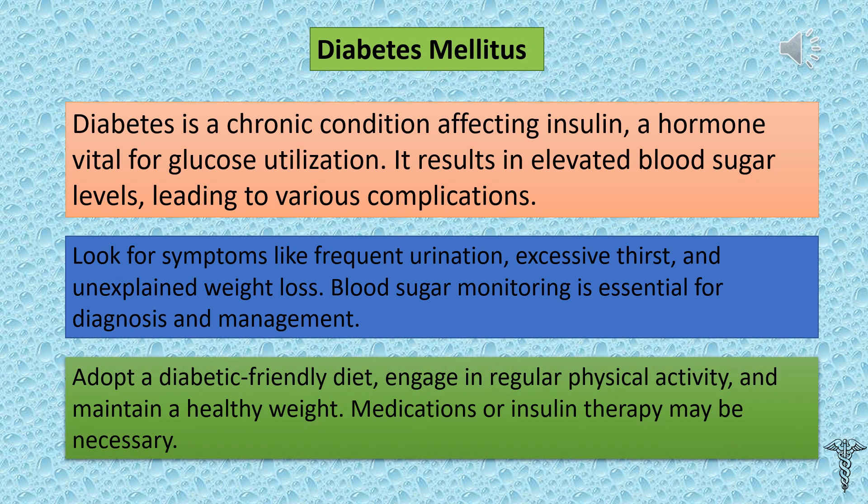Diabetes mellitus is a chronic condition affecting insulin, a hormone vital for glucose utilization. It results in elevated blood sugar levels leading to various complications. Look for symptoms like frequent urination, excessive thirst, and unexplained weight loss. Blood sugar monitoring is essential for diagnosis and management. Prevention includes adopting a diabetic-friendly diet, engaging in regular physical activity, and maintaining a healthy weight.